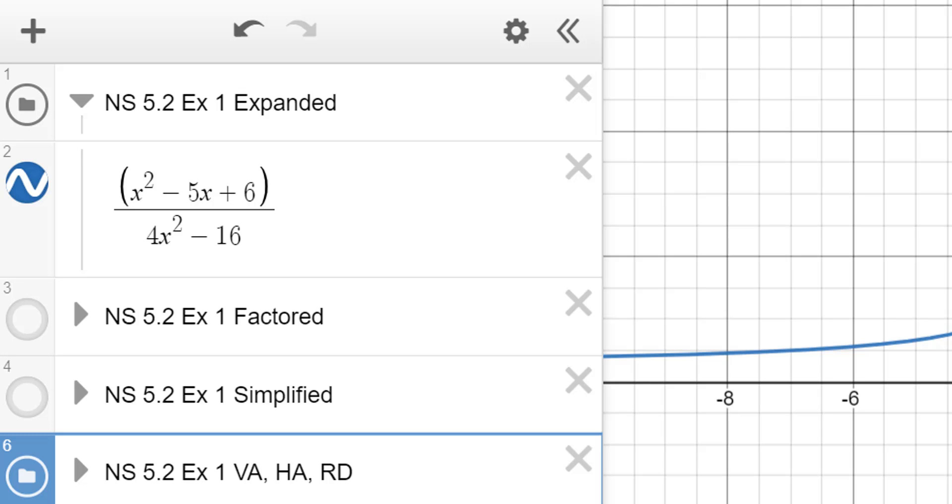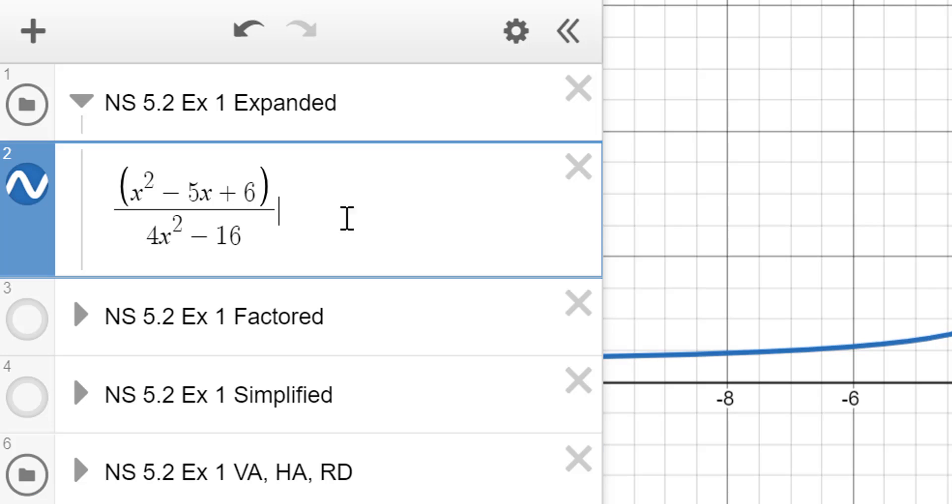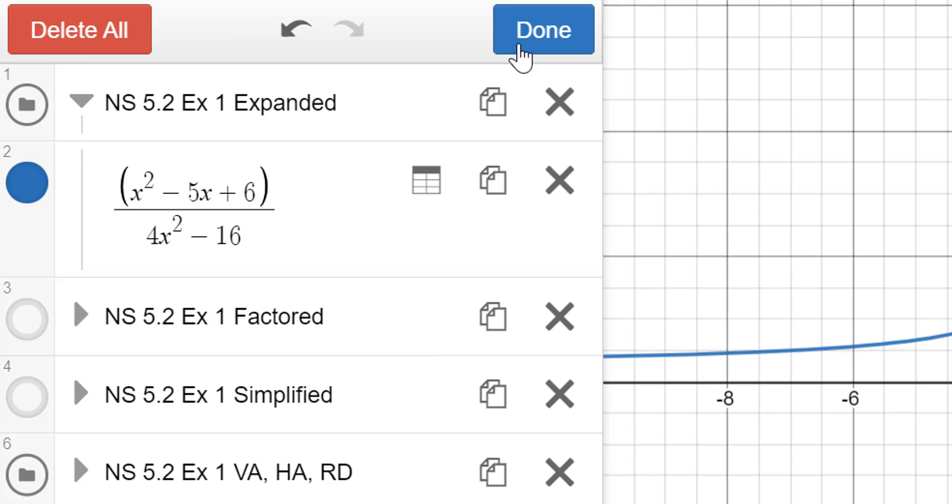Now, what you're going to do is take your cursor and put it right in here into the line that has that equation in it. Up here, you're going to click on this little edit list, the gear icon, and select that. From there, you're going to notice three icons next to our function, x squared minus 5x plus 6, that quantity over 4x squared minus 16. You're going to duplicate that by hitting the duplicate icon.